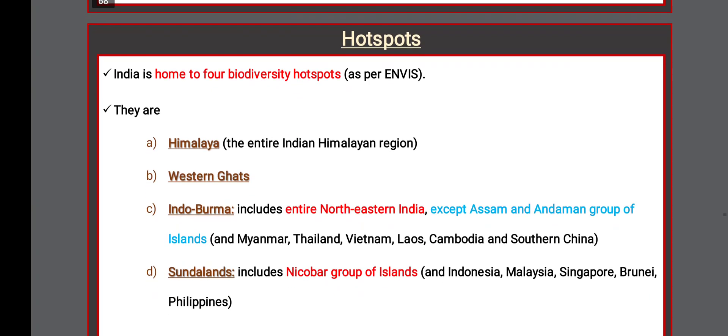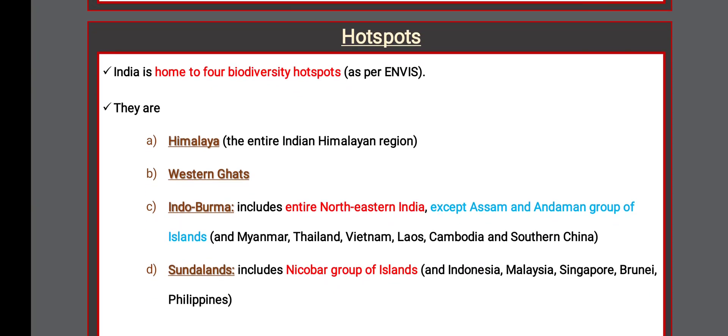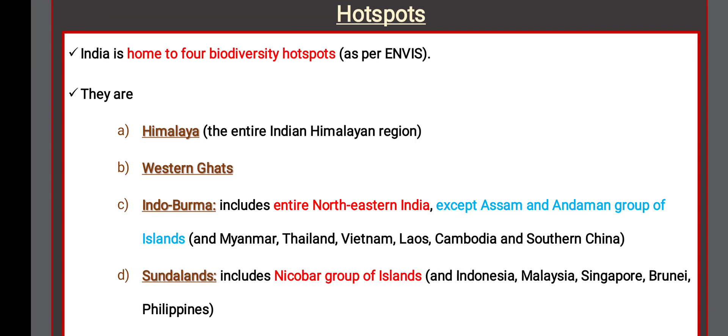India is home to four biodiversity hotspots: the Himalayas, Western Ghats, Indo-Burma and the entire northeastern India except Assam, and the Andaman group of islands. Sundalands include the Nicobar group of islands.